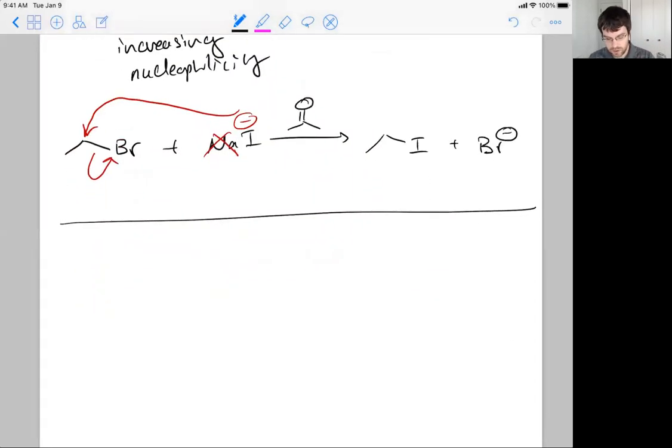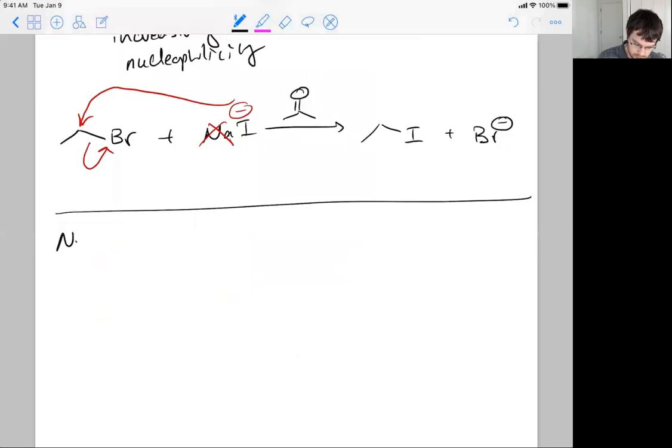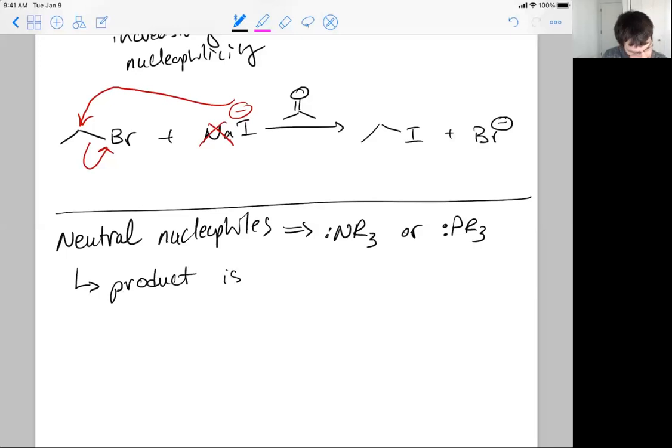Okay. We could also have neutral nucleophiles. Neutral nucleophiles, and they could be like NR3 with a lone pair or PR3, phosphorus, with a lone pair of electrons. These have a little bit of a twist to them. The product is going to be positively charged.